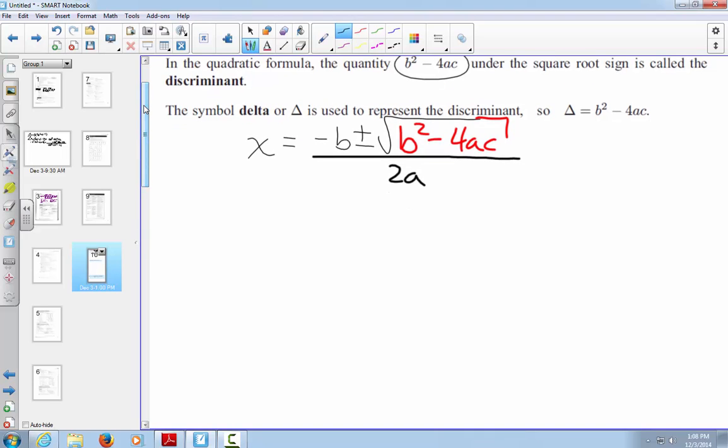My discriminant is this b squared minus 4ac. What is the purpose of that? It helps us a lot. If we look at our quadratics, there's three different ways we're going to look at it. We've got a quadratic that has two x-intercepts or two solutions when we're solving for x.